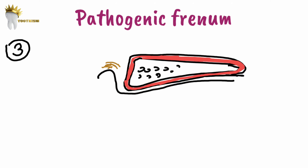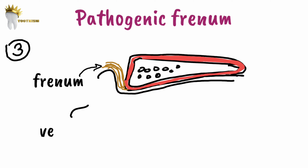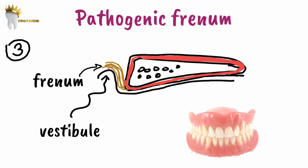When there is no apparent zone of attached gingiva along the midline, this means the frenum has made the vestibule too shallow. This can complicate the construction of a denture. In this case, the frenum needs to be removed.